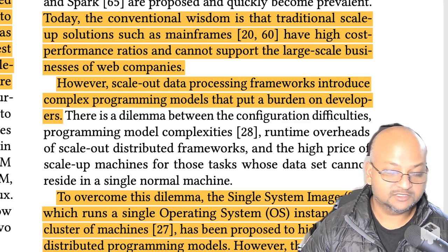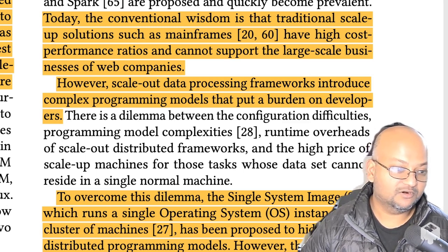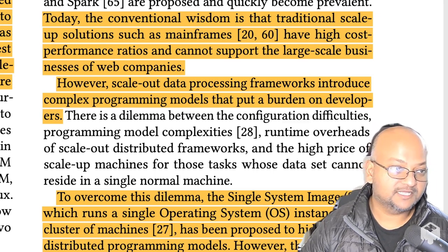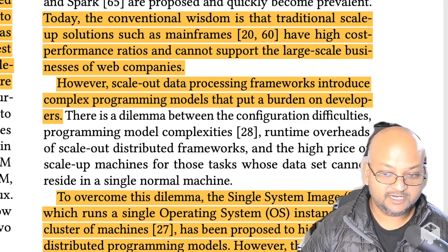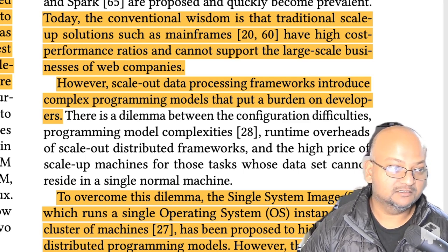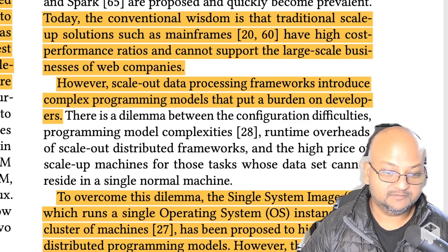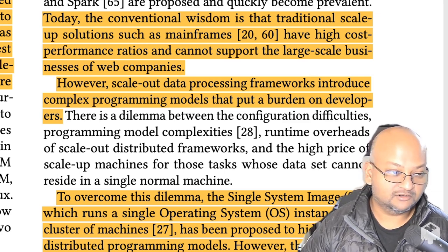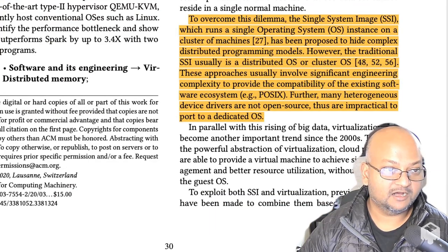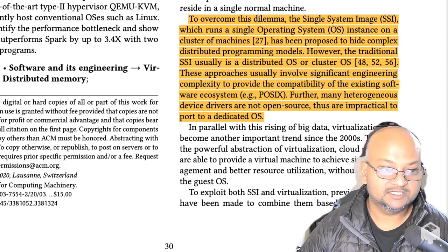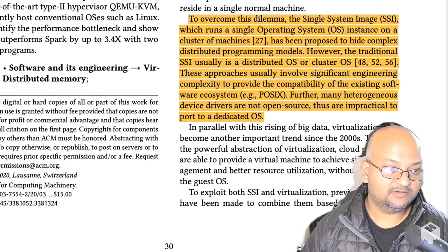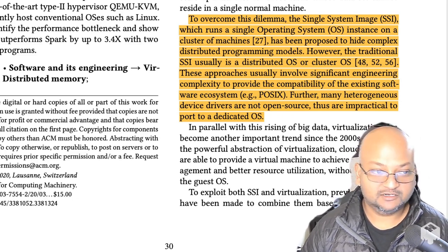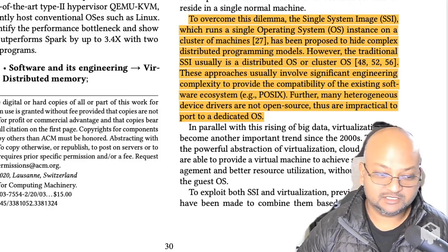With scale-out you can get more performance — more resources for the same price. The trade-off is that if you scale up, you pay more for the machine but you can run your single address space application on that giant machine. Whereas if you scale out, you get more resources for the same amount of money, but you have to spend some engineering effort to re-architect your application for a multi-machine architecture. This is where the idea of a single system image comes in: combining resources from many machines but making it look like one single machine to an application running on it.